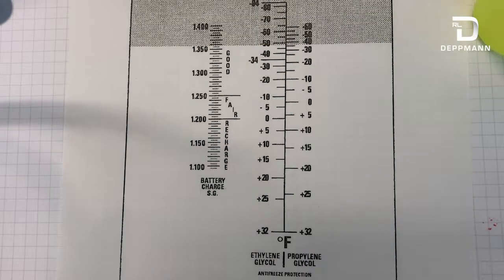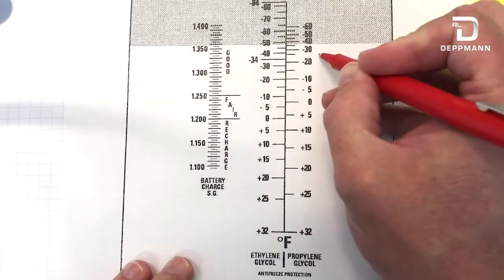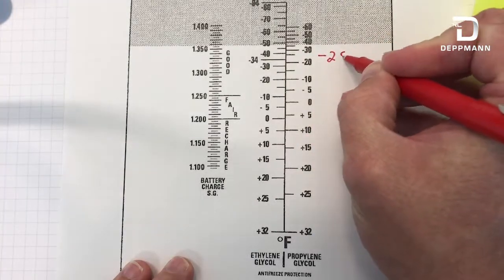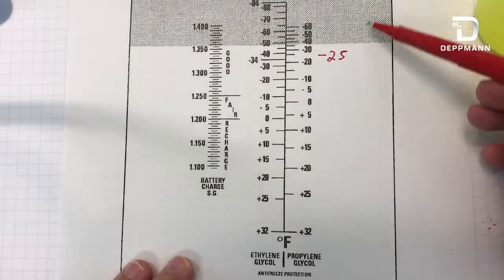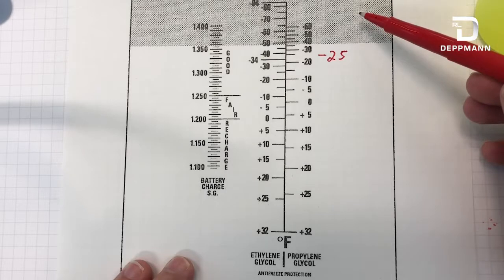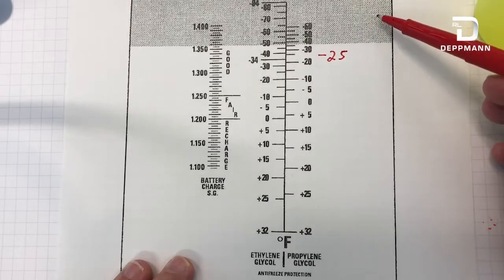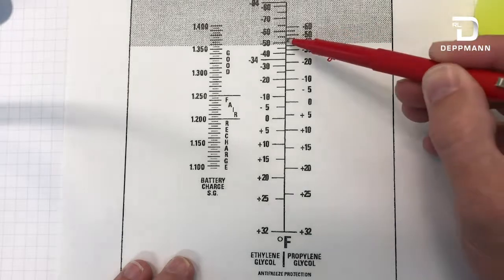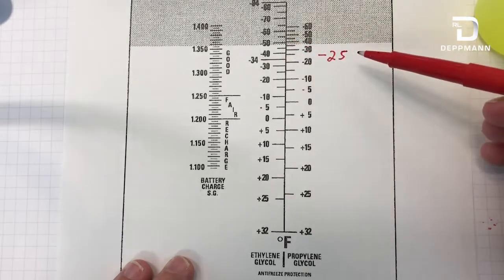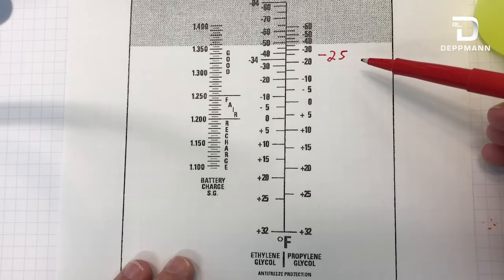I have viewed my sample through the refractometer and I am getting a reading of negative 25. As you can see here in this example, they're showing you the graded area. When you view it through the meter, you will see a noticeable difference in color between the dark and the light. Where that line crosses this scale will be the freeze protection level that you have in your glycol.